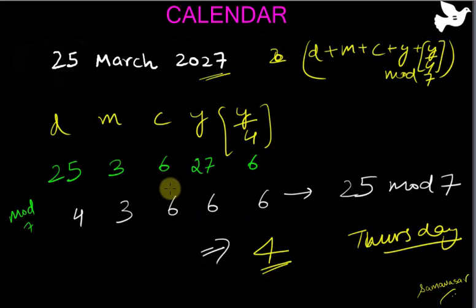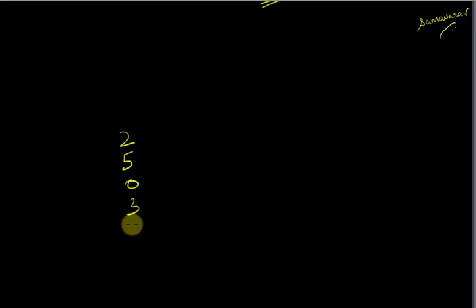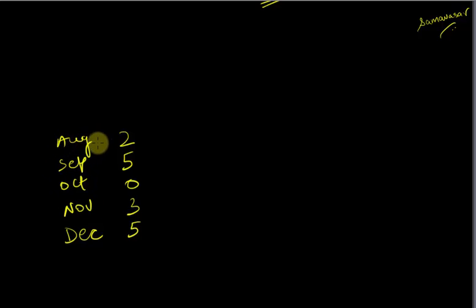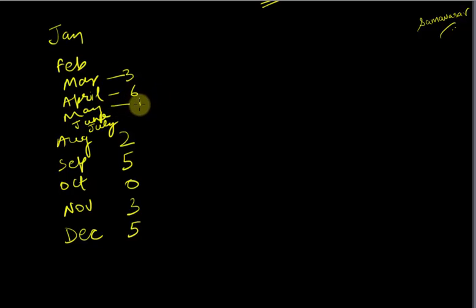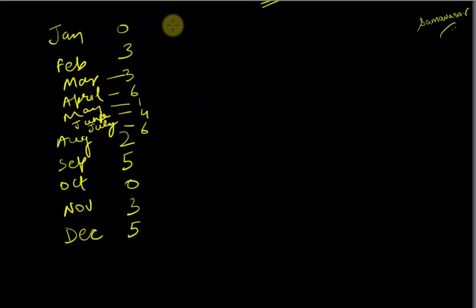To revise the month codes: remember 25035 — this gives codes for December, November, October, September, August (reading right to left). Add 1 to each digit to get 36146 for March, April, May, June, July. January and February: for a normal year they are 0 and 3; for leap years, 6 and 2.